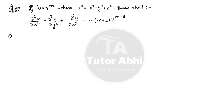Let's start this video. The question is given: if v is equal to r^m, where r² = x² + y² + z², show that ∂²v/∂x² + ∂²v/∂y² + ∂²v/∂z² = m(m+1) · r^(m−2). We have to prove that.